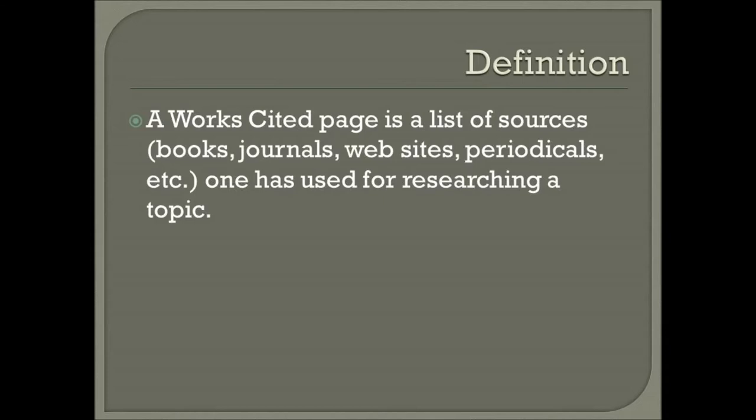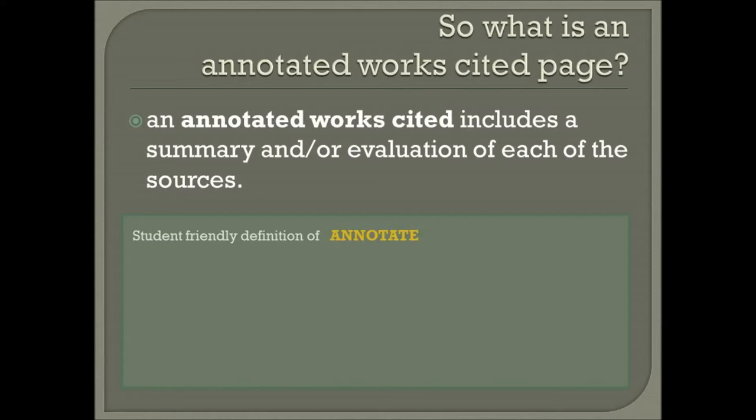Nothing more than a glorified works cited page. A works cited page is a list of sources that you would use on a research paper — books, journals, websites, magazines, videos, DVDs, anything you would use for researching a topic. But what we do with an annotated works cited page is we're including information and an evaluation of your source so that we can start to make good critical thinking decisions as a writer and a researcher.